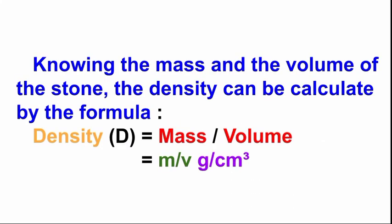Knowing the mass and the volume of the stone, the density can be calculated by the formula: Density = Mass / Volume = M / V, expressed in grams per centimeter cube.